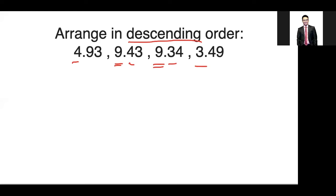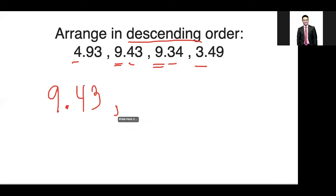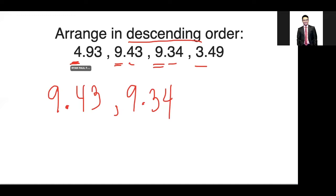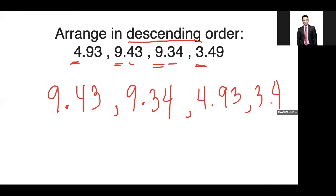We need to arrange in descending order, so we start with the highest value: 9.43. Obviously the next number after 9.43 is 9.34. Then looking at the next two decimals, this is 4 and this is 3, so the next is 4.93, and lastly 3.49. When arranging, we look at the highest place value first, and if they're the same, we look at the next highest place value.